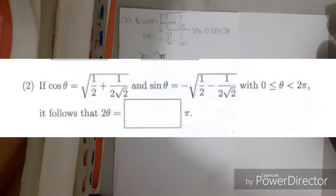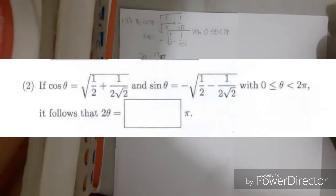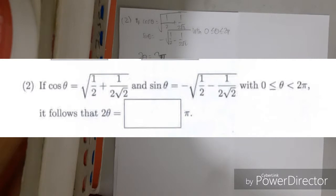If cosine theta equals root of half plus 1 over 2 root 2, and sine theta equals minus root of half minus 1 over 2 root 2, with the interval of 0, theta, and 2 pi, it follows that 2 theta is equal to what pi?